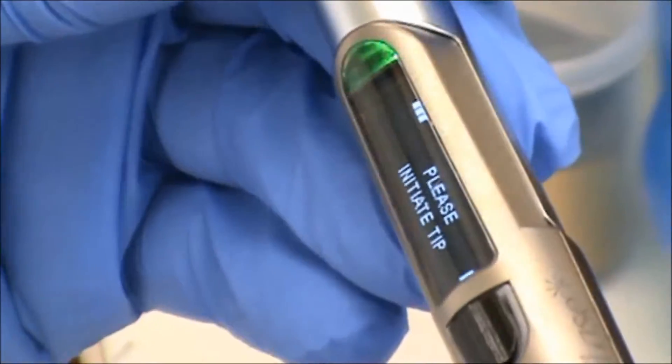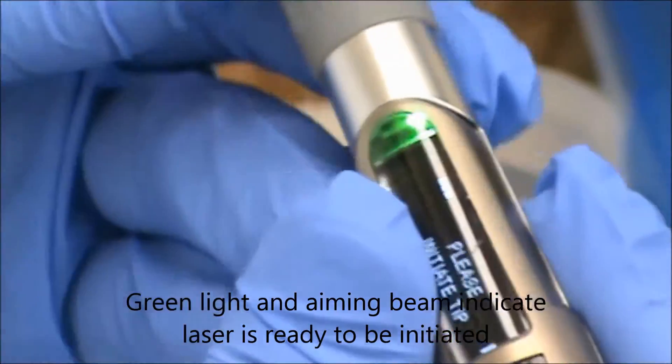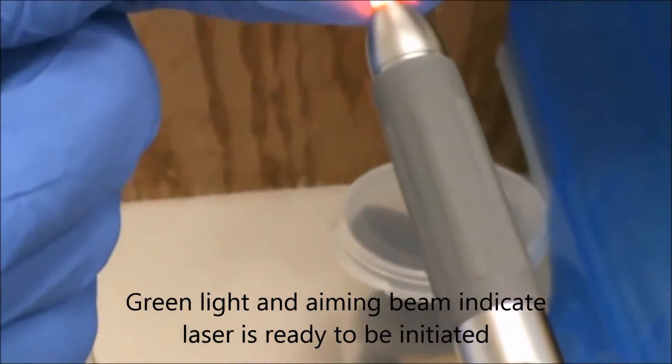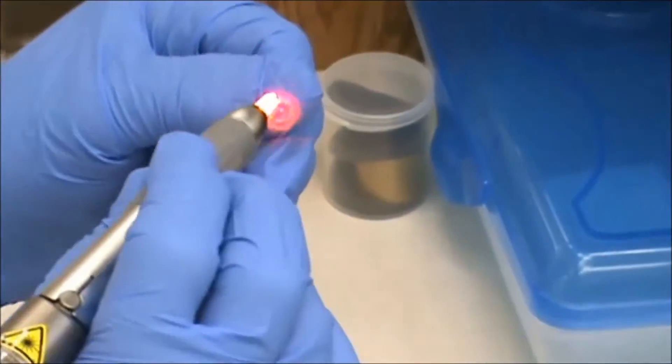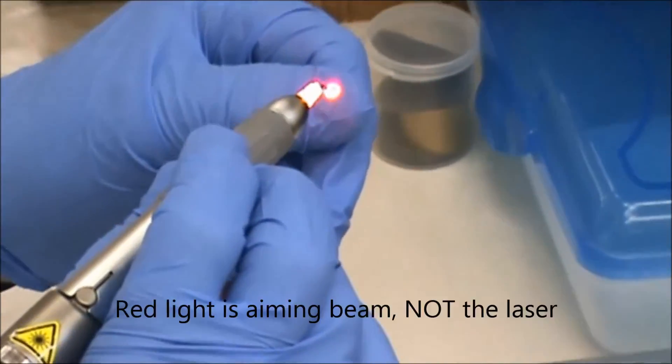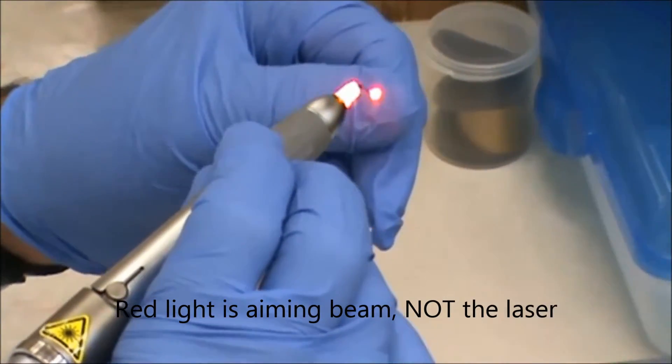And it's going to ask us to initiate the tip. The green light and the solid glowing red indicate that it is ready to fire. But at this point in time, the red is just an aiming beam. It is not emanating any laser energy.